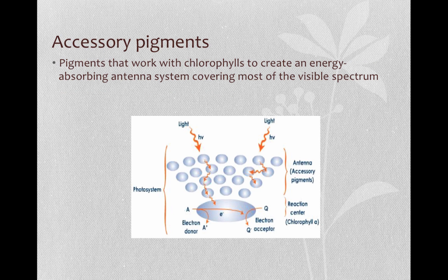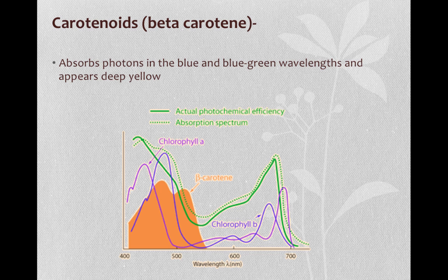Accessory pigments absorb colors between blue and red and transfer that energy to the chlorophyll. This way, more of the energy in the visible spectrum is used. Carotenoids are accessory pigments. Beta-carotene absorbs photons in the blue and the blue-green wavelengths and appears deep yellow. Carotenoids may not only transfer energy to chlorophyll, but may absorb excess energy that could actually damage the chlorophyll. Accessory pigments work with chlorophylls to create an energy-absorbing antenna system covering most of the visible spectrum.